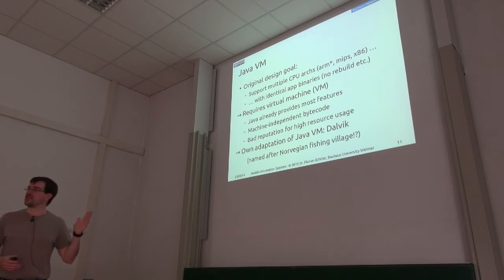The problem was that Java always had a kind of bad reputation that it uses lots of resources, lots of RAM, lots of CPU, and so on. For that reason, Google introduced their own adaptation of the Java virtual machine, which is called Dalvik. Dalvik is a Norwegian fishing village. I think one of the developers was born there or something like that.